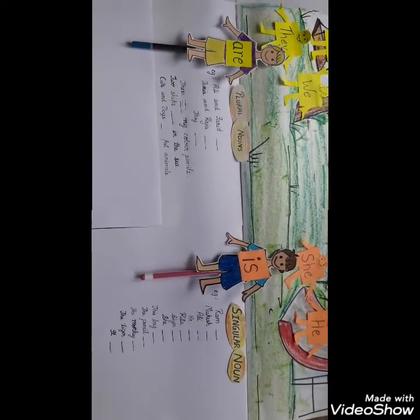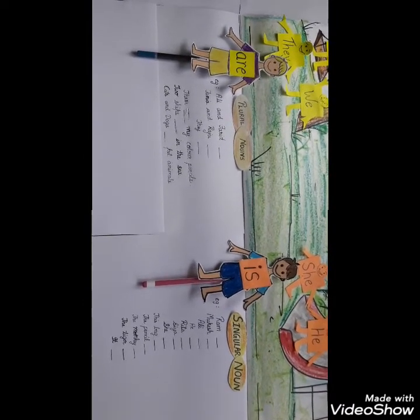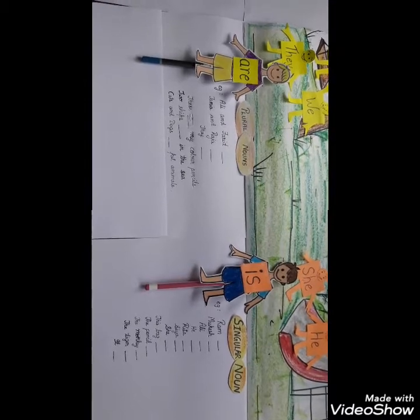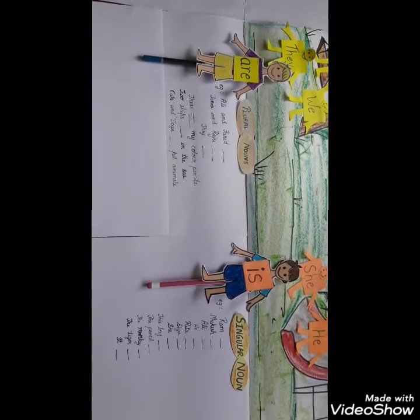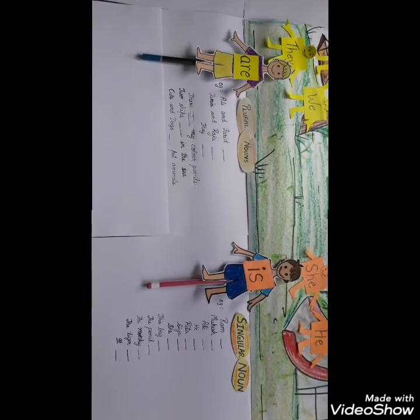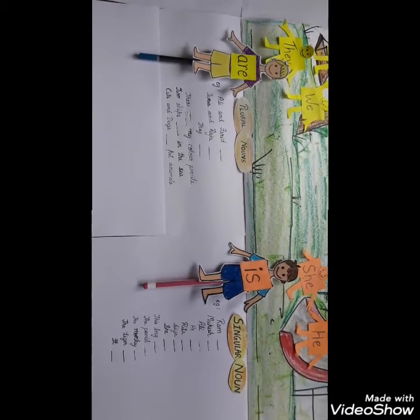Are is used for more than one thing, like colour pencils, ships, cats and dogs. So we say these are my colour pencils. Two ships are in the sea. Cats and dogs are pet animals.